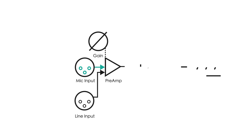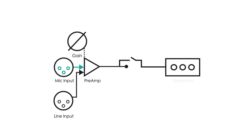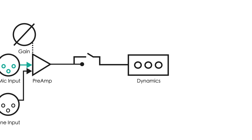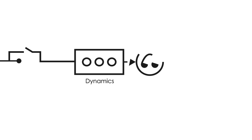The signal then passes to the onboard dynamics, which includes your compressor, gate, limiter, EQ, expander, and de-esser. The PFL, or pre-fader listen, is used to solo a channel for listen only in the monitor headphones.